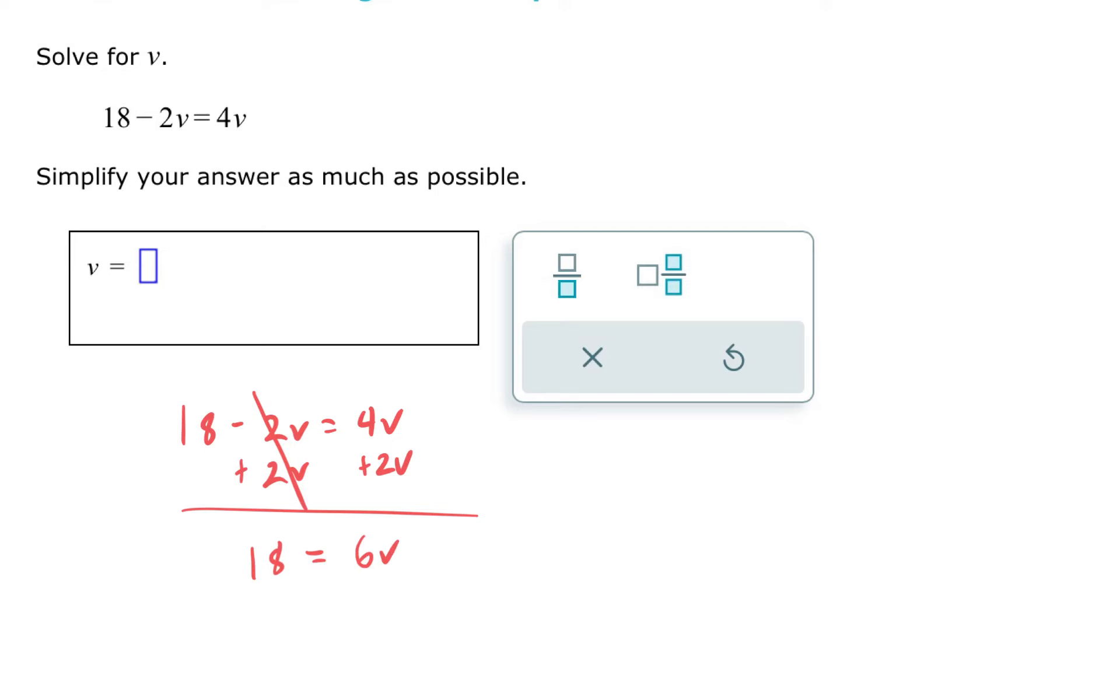Now I can solve it just like I have when I have the variables on one side. I'm dividing by 6 because 6v is the same thing as 6 times v. I've got to do that to both sides. Then I'm left with v on the right side, 18 divided by 6, which is 3 on the left side.